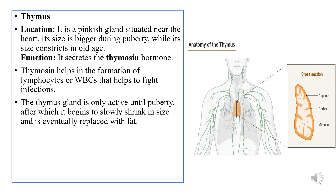The thymus gland is present near the heart region, below the neck. It is a pinkish gland situated near the heart, and its size is larger until puberty. After puberty, as a person grows older, the size of the thymus gland shrinks and is then replaced by fat. The thymus produces and secretes thymocytes, which help in the formation of lymphocytes — white blood cells — whose main function is to fight infection and boost immunity in the human body.